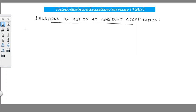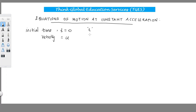First, we consider the initial conditions. Initial time is taken as t equal to zero, and initial velocity is taken as u. Final time, or a time after the motion begins, is taken as t, and velocity at that time is taken as v.